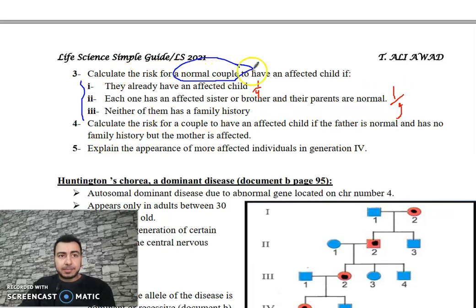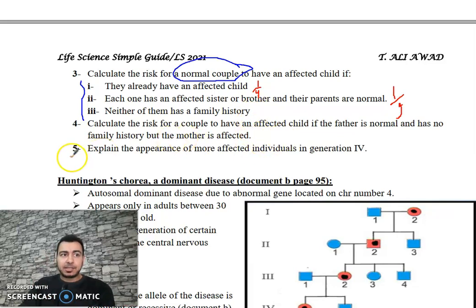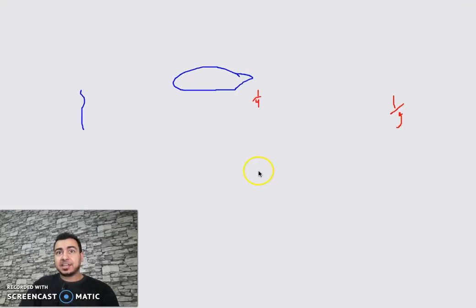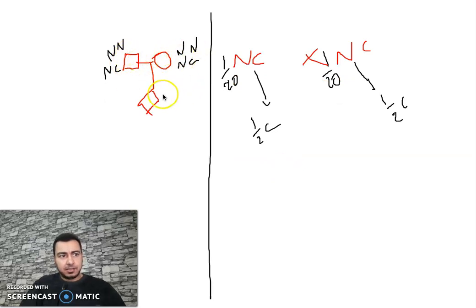Question 3: Calculate the risk for a normal couple to have an affected child if neither of them has any family history at all. This means we don't know anything about them — they are just a normal couple with no known affected relatives. We need to find the probability that they are NC carriers.